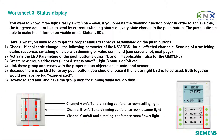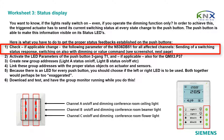Status display. You want to know if the lights really switch on, even if you operate the dimming function only. In order to achieve this, the triggered actuator has to send its current switching status at every state change to the push button. The push button is then able to make this information visible on its status LEDs. Here is what you have to do: check and if applicable change the following parameter of the N536DB51 for all affected channels — sending of a switching status response, and switching on also with dimming or value command.